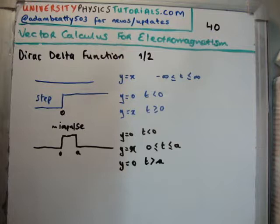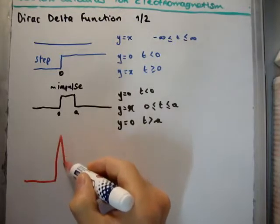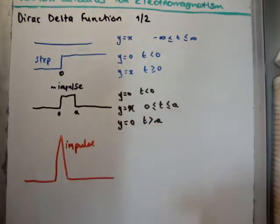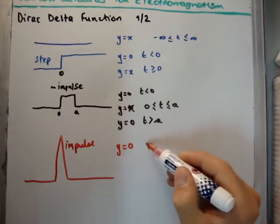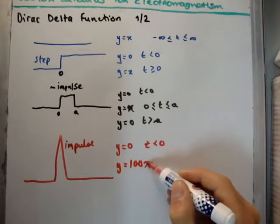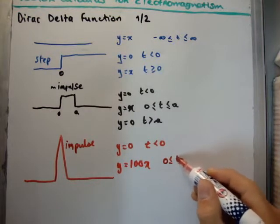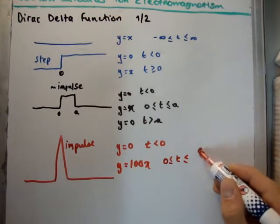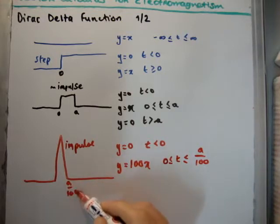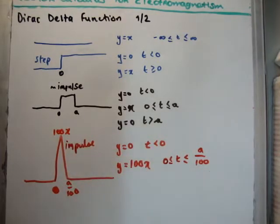So let's say now we have a function which is off for a long time, then it shoots off — it's on and kind of dies away. This is an impulse function. Here y is equal to zero for t less than zero, but y is equal to, say, 100x so it's much bigger than it has been in the past. And it would be when t is greater than or equal to zero but less than or equal to a over 100. So we've shrunk it down — this is a over 100, this is zero, and this might be 100x.